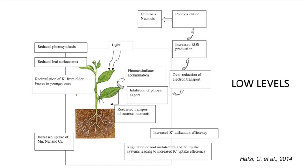Here is a scheme from a paper by Dr. Chokri Hafsi showing the chain reaction of lack of potassium within the plant. Starting with light — the plant is trying to photosynthesize but less CO2 is being fixed. This will affect growth, and we will have less leaf area.